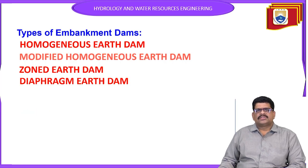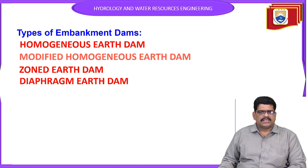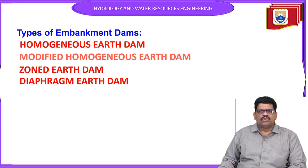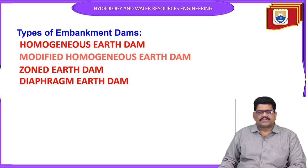Now let us see the types of embankment dams. The first one is a homogeneous earthen dam, the second one is a modified homogeneous earthen dam, the third one is a zoned earthen dam, and the fourth one is a diaphragm earthen dam. These are the generally considered types of embankment dams.